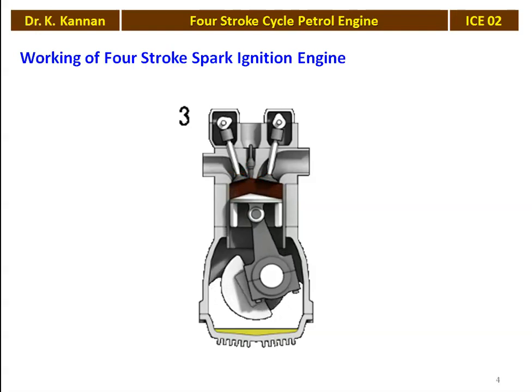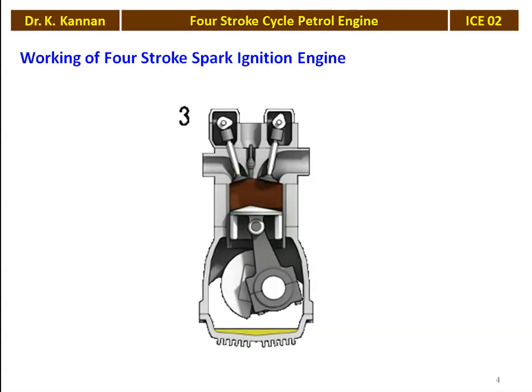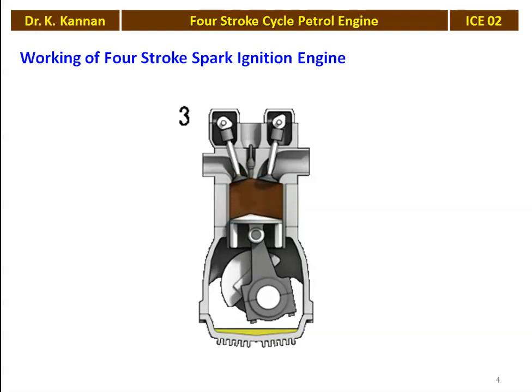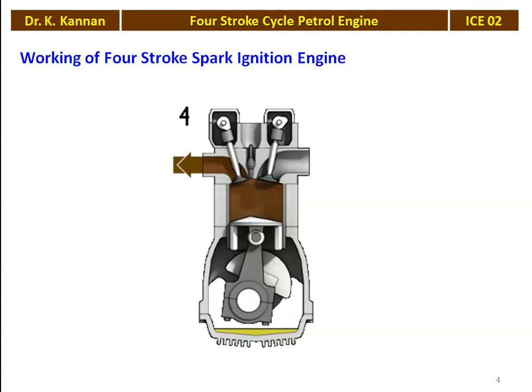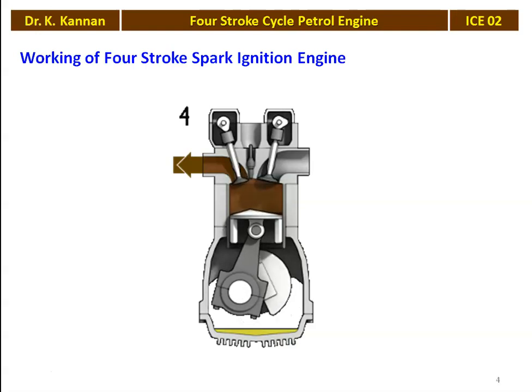There is a piston, inlet valve, exhaust valve, cylinder, crank, connecting rod, and crankshaft — all the components of the 4-stroke cycle petrol engine.